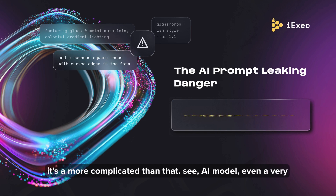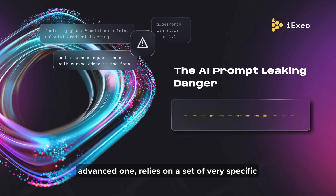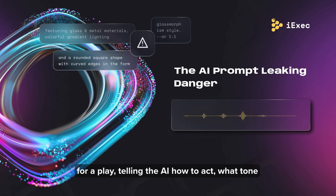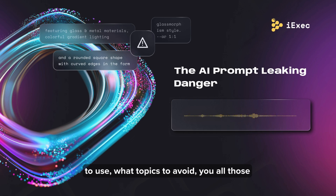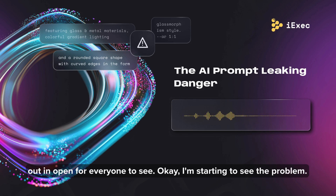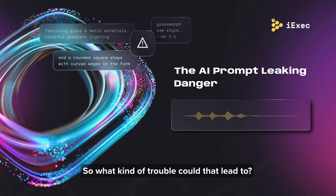An AI model, even a very advanced one, relies on a set of very specific rules that determine how it operates. We call this the system prompt. It's kind of like the director's notes for a play, telling the AI how to act, what tone to use, what topics to avoid — all those boundaries. It's like its rulebook. But now imagine those director's notes being accidentally left out in the open for everyone to see. So what kind of trouble could that lead to?